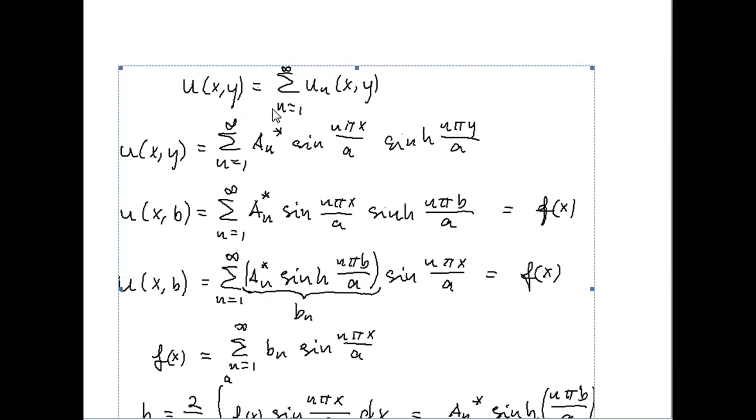It's sigma n from 1 to infinity of u_n, where u_n is this product. In order to find this a_n star, these are constants which are dependent on n, we insert the boundary conditions.